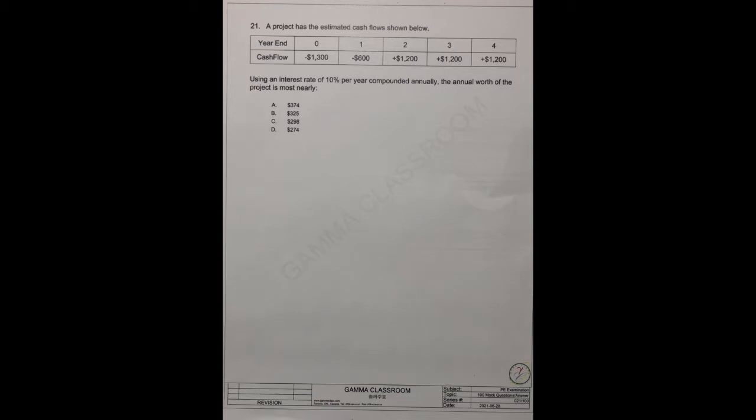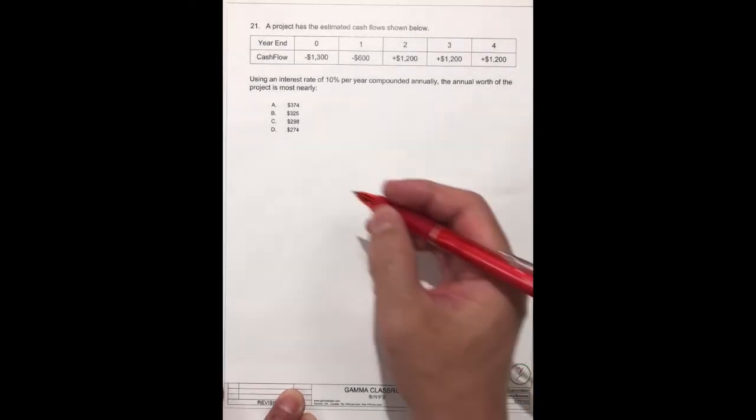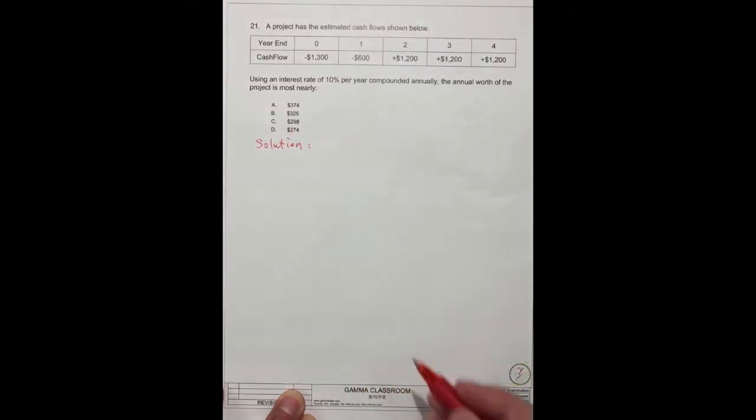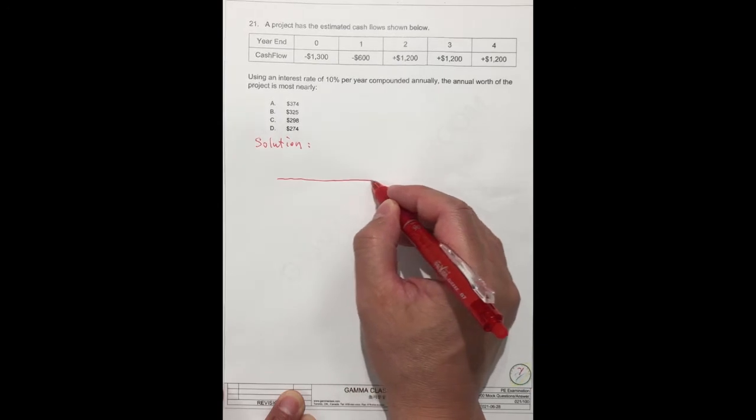Use an interest rate of 10% per year, compound annually. The annual worth of the project is most nearly one of the numbers. When you see this project, you see different values in different years. We have to change all the values into the same time frame. Before I do this, we need to draw a diagram to show these values.